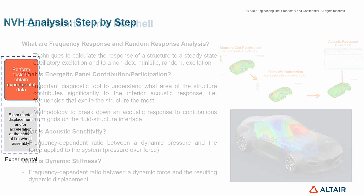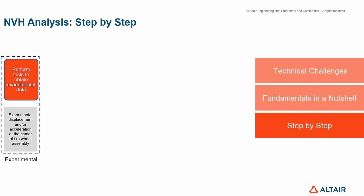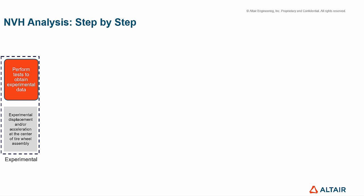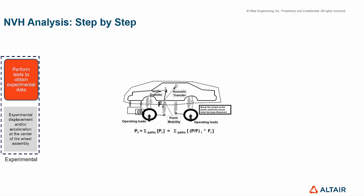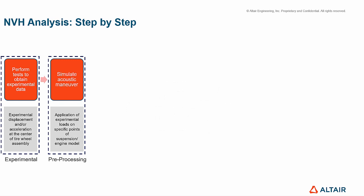Here is an overview of the step-by-step NVH analysis. Everything starts with performing tests to obtain experimental data, whose output is a set of experimental displacements and/or accelerations at the center of the tire-wheel assembly. Then the engineer simulates the acoustic manoeuvre. An acoustic manoeuvre could be road noise, resulting from the contact of rotating wheels and the road, or engine noise, whose source are engine loads. The aim of this step is the application of experimental loads on specific points of the suspension or engine model.